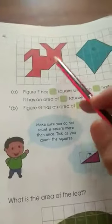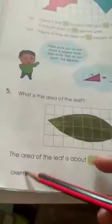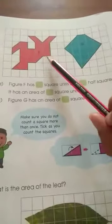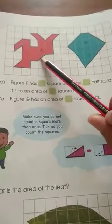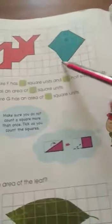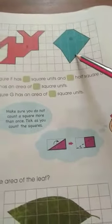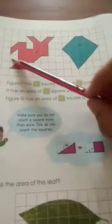Now, come to the next here. Again, on page number 275. Again, you have to count the square units. How many square units in figure F and how many square units in figure G. So, again you will count it like this.